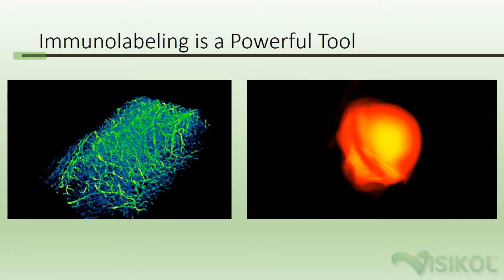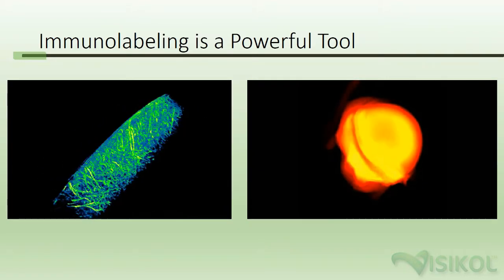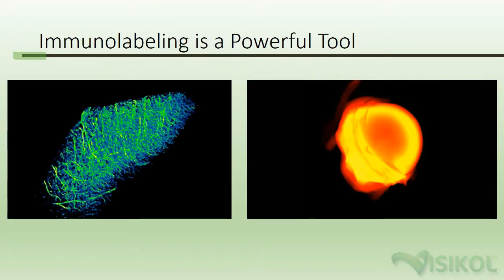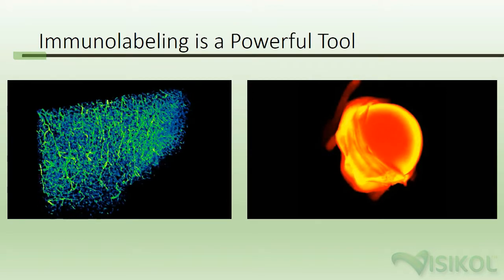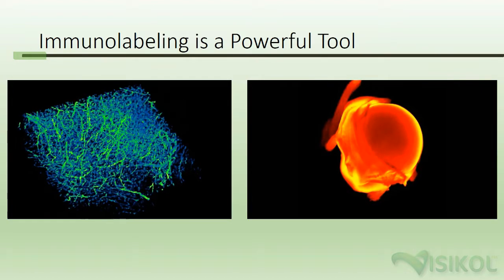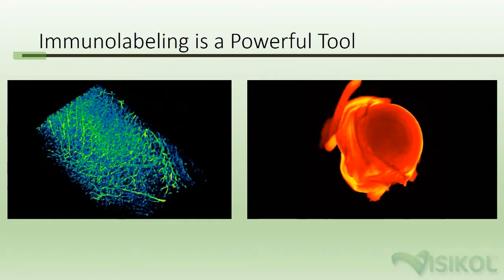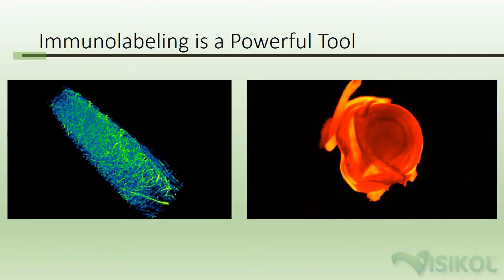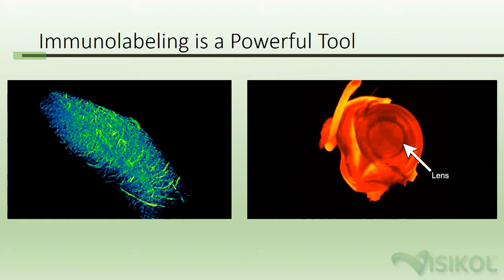Immunolabeling is a powerful tool used to identify the location and identity of proteins, receptors, and cells within tissue. Immunolabeling techniques are most commonly used on tissue sections and in Western blotting. Combined with tissue clearing, immunolabeling provides the ability to interrogate the structure of tissues in three dimensions.